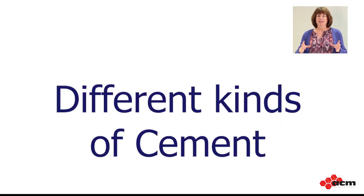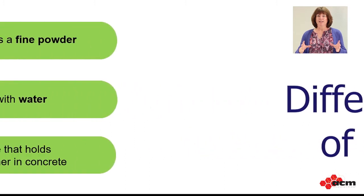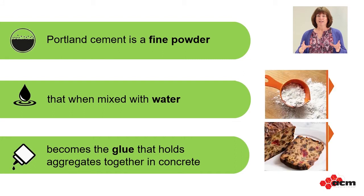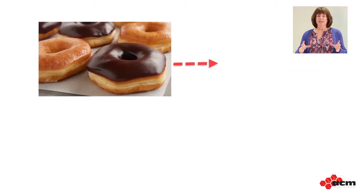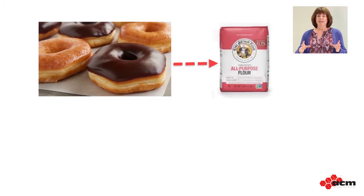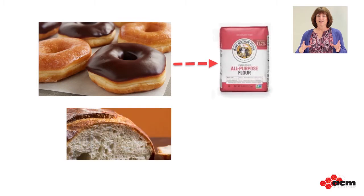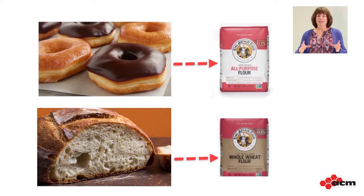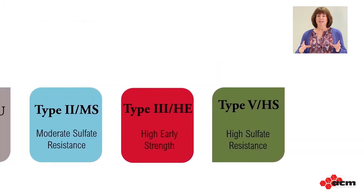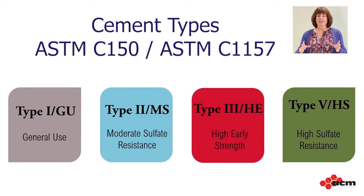Different kinds of cement. We talked about cement and water paste being the glue that holds the concrete together, just like flour and water being the glue that holds baked goods together. Besides the amount of flour that Dean uses, he can also use different kinds of flour — bread, cake, gluten-free — to make different kinds of baked goods. Cement is similar. There are basically four main types of cement with many different additional classifications depending on how the cement is made or how it performs.